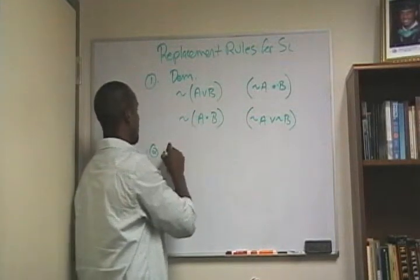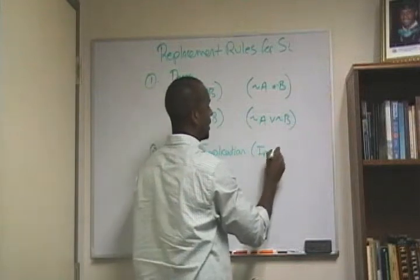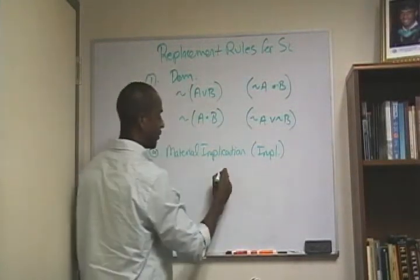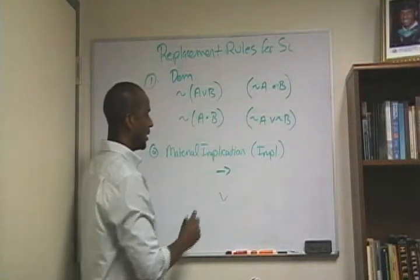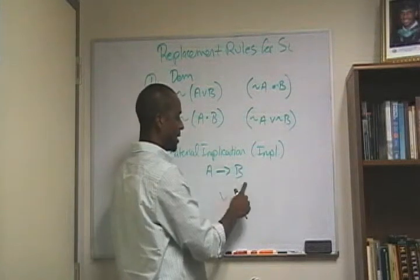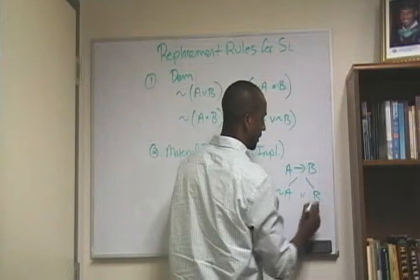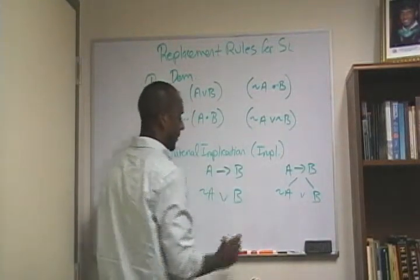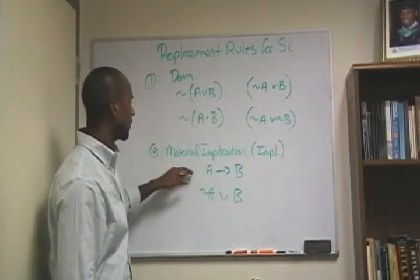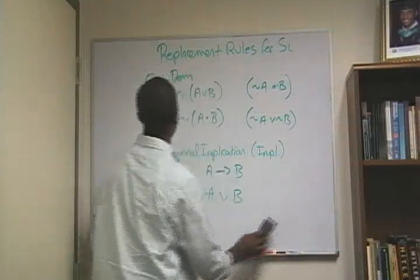The next one, number two, is material implication, abbreviated IMPL. Basically, material implication allows me to change a conditional into a disjunct — going from a conditional statement to a disjunctive statement. If I have 'if A then B,' we can recall from truth trees that 'if A then B' becomes 'not A or B.' So material implication allows me to transform any line on my deductive inference from a conditional to a disjunct.